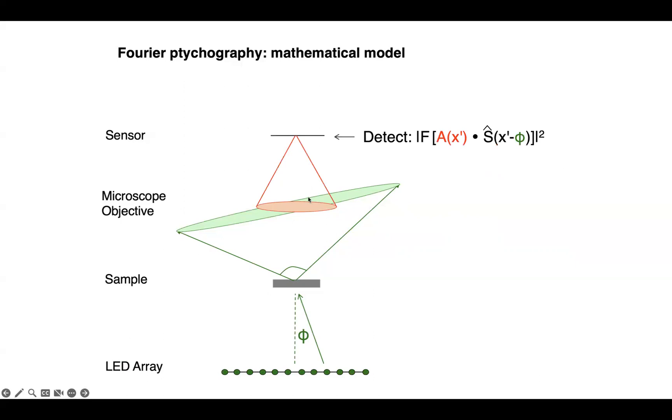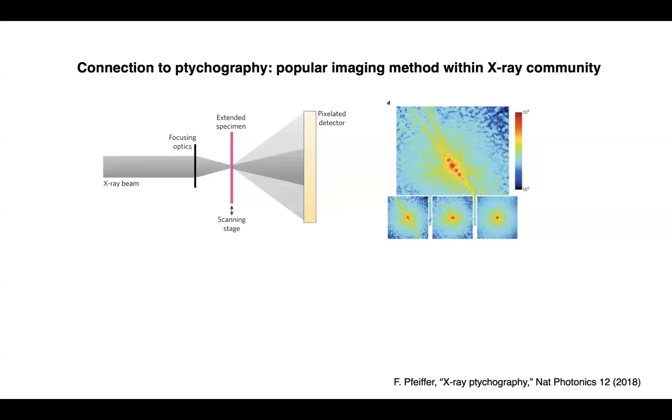And then finally, we detect the Fourier transform of that product squared. In other words, the light from the back focal plane once again propagates to the sensor, that's denoted by this Fourier transform, and we can only detect intensities in imaging applications generally, so we have this magnitude squared. Somewhat complicated equation, but not too bad.